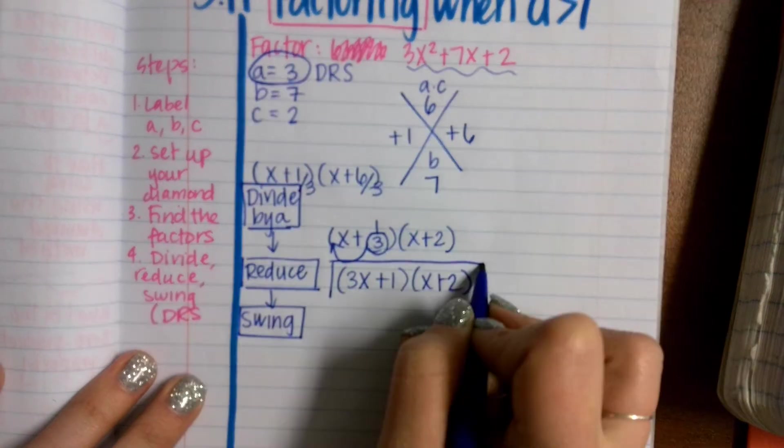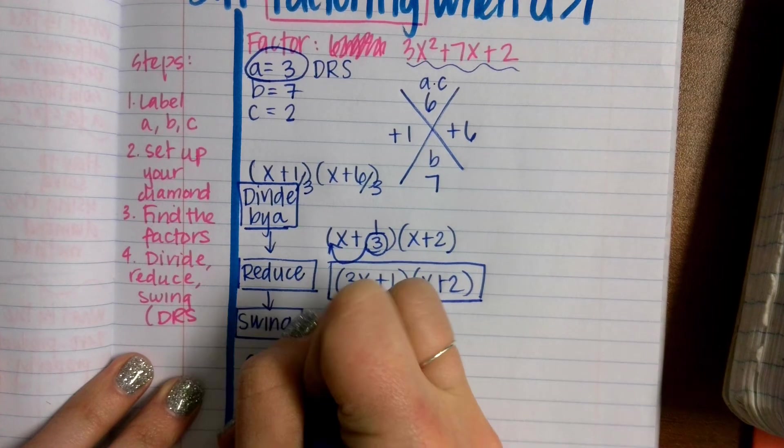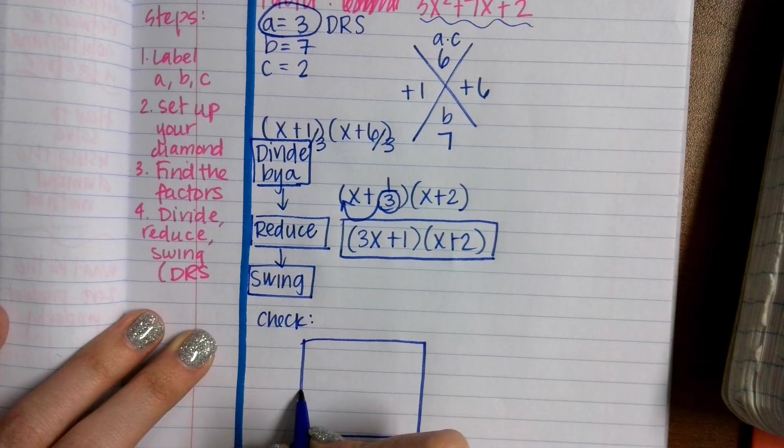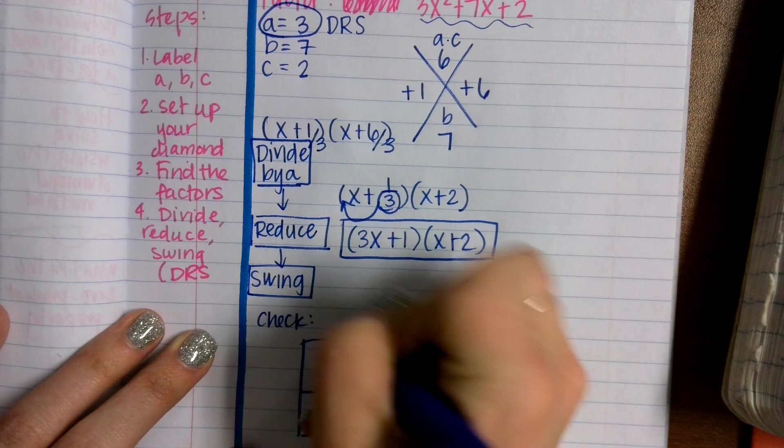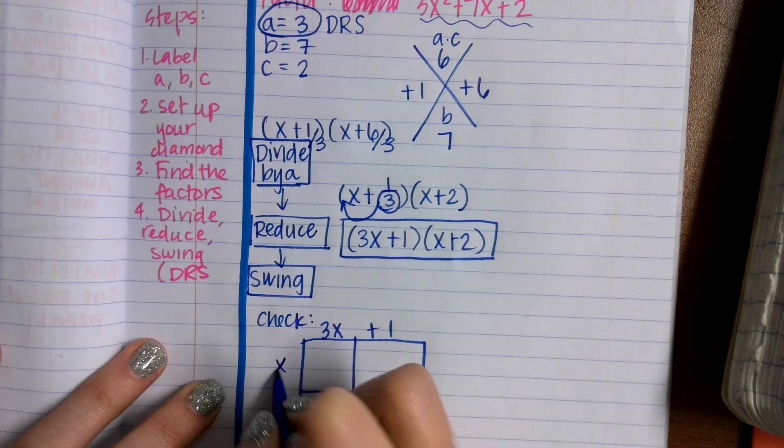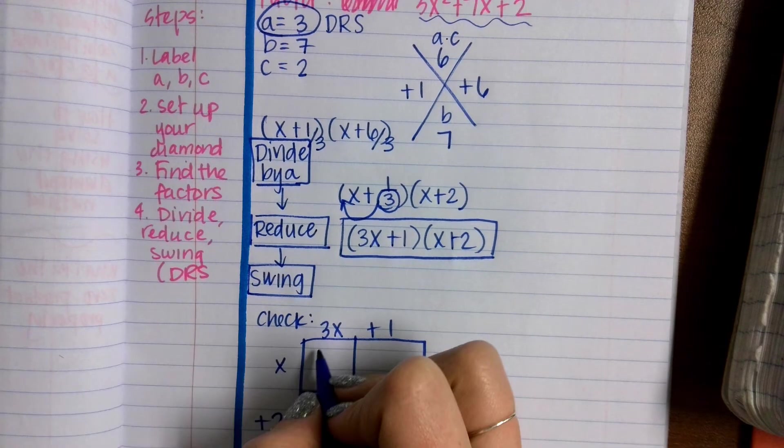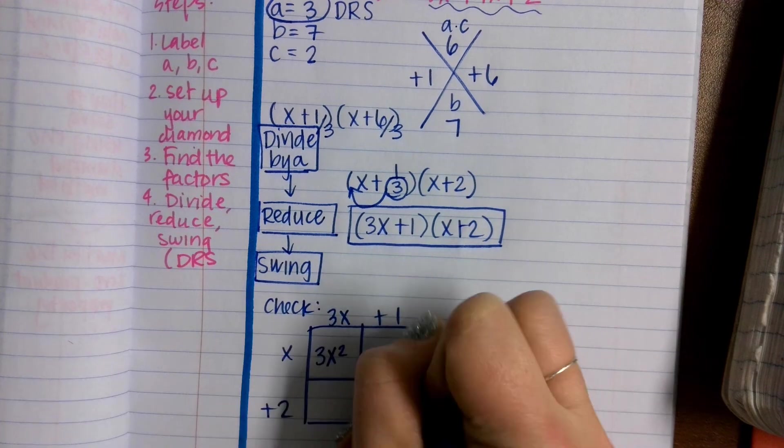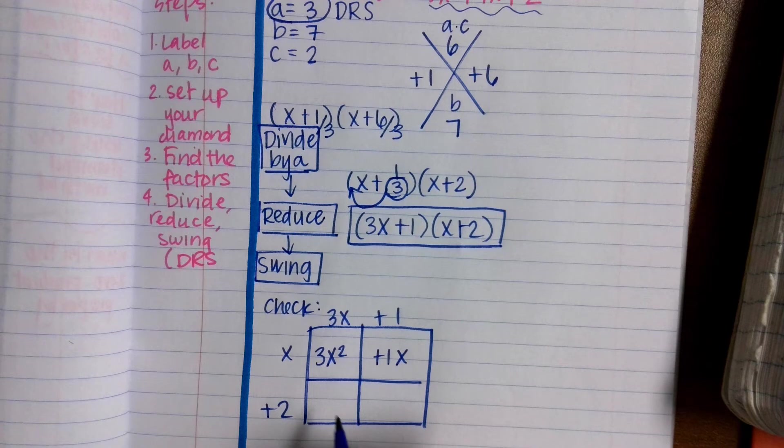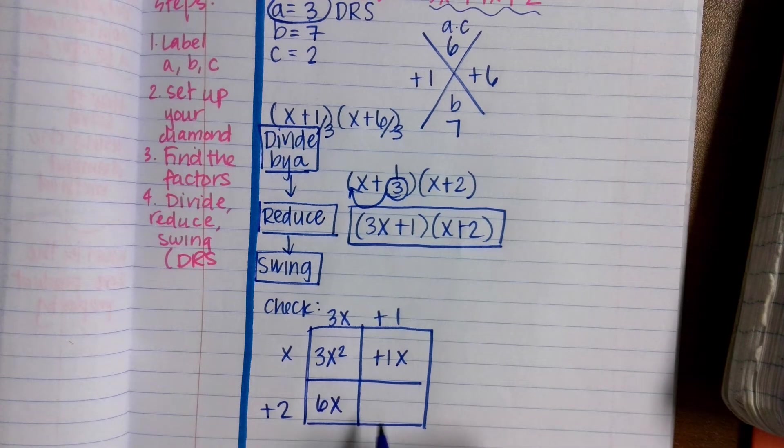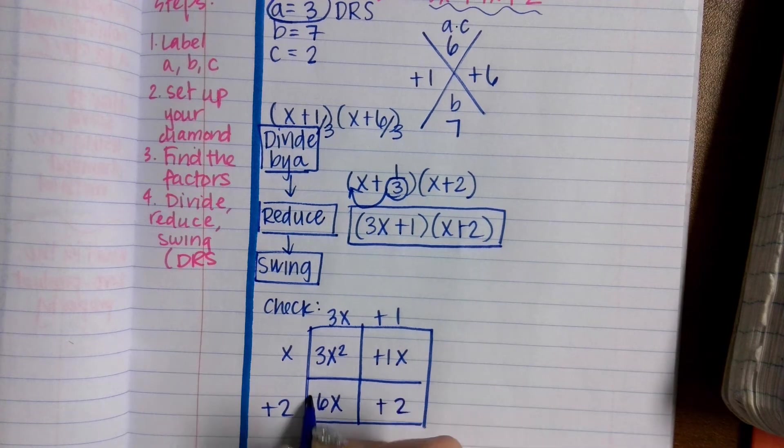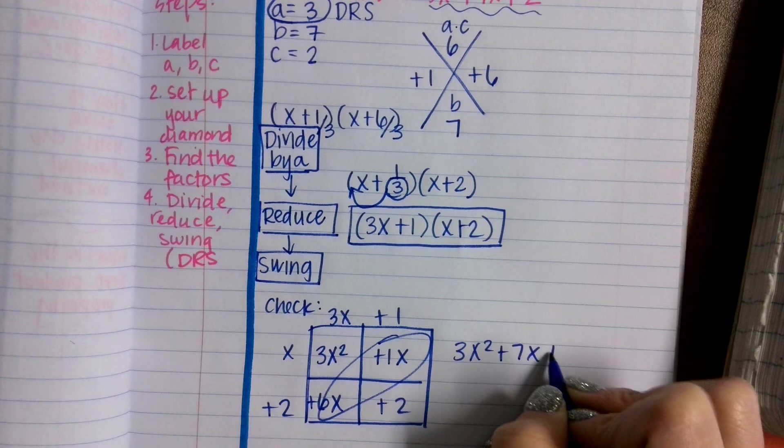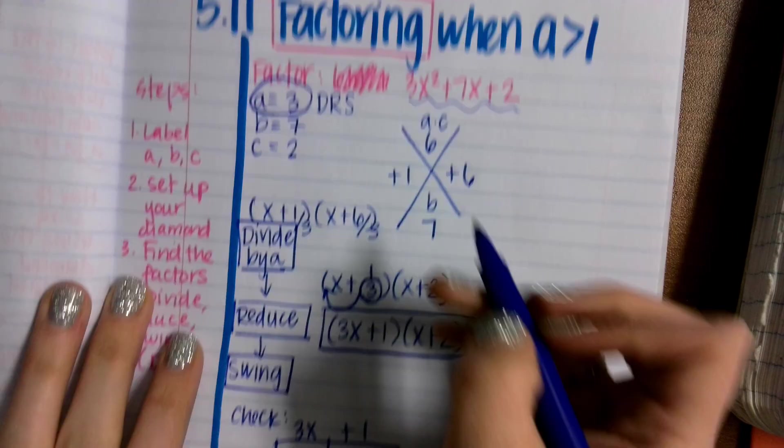This is my answer. How can we check? We can check using the box method or FOIL. 3x plus 1, x plus 2. Let's check. 3x times x is 3x squared. 1 times x is 1x. 3x times 2 is 6x, and 2 times 1 is positive 2. Combine your like terms. 3x squared plus 7x plus 2. Is that my original polynomial up here? Yep. This checks out. So those are my factors.